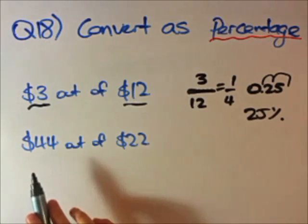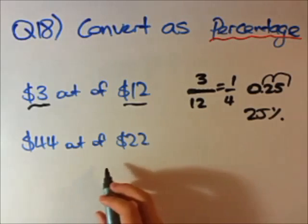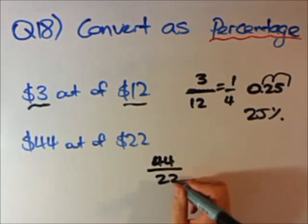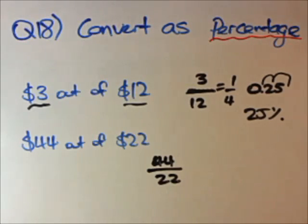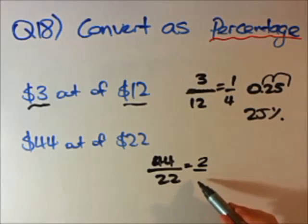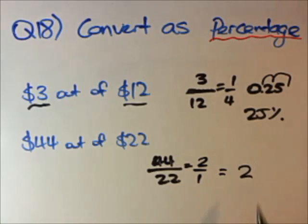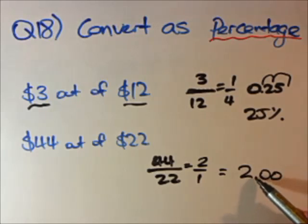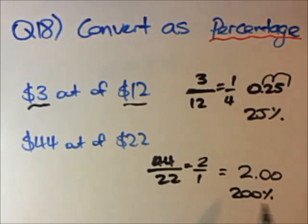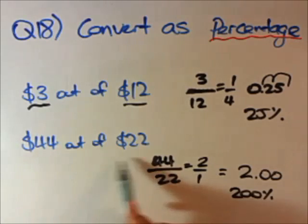For the second question, 44 out of 22 — we'll use the same technique, treating 'out of' as a division sign. So 44 out of 22: first convert to simplest form. 22 goes into 44 two times and into 22 one time, so we simplify to 2, or 2.0. To put it as a percentage, we move the decimal point two places and get 200%. That makes sense because 200% means double, and 44 is double 22.